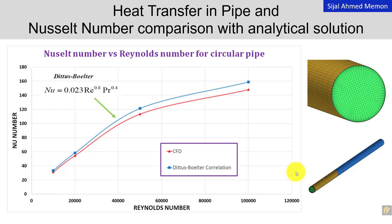Hello and welcome to the new workshop on heat transfer in pipe and Nusselt number calculation and comparison with the analytical model given by DTS Bolter correlation for turbulent pipe flows or turbulent internal flows.